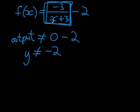Why? Because this part of my output, the fraction part, cannot be zero. So my answer can never be zero minus two. Never. Because that zero can never exist. It will always be something minus two. And therefore, my output can never be zero minus two or just negative two.